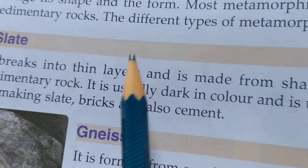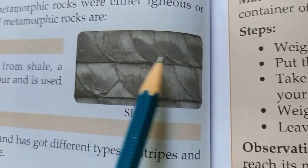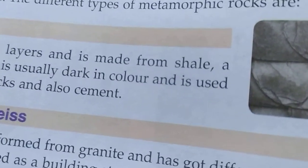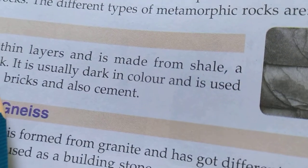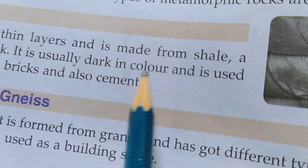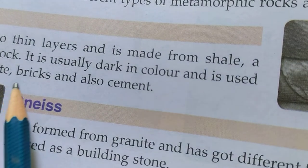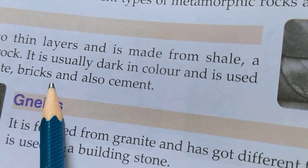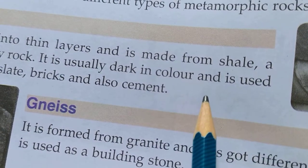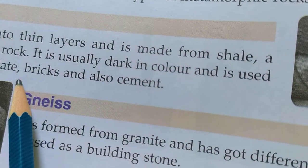Now, slate. This is one type of metamorphic rock. This is the slate picture. It breaks into thin layers. This layer is very thin and it is made from shale. It is usually dark in colour.